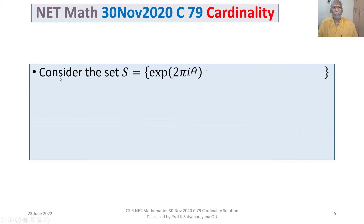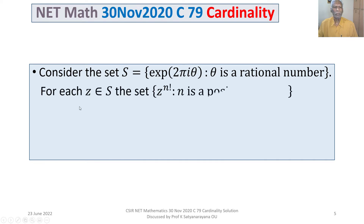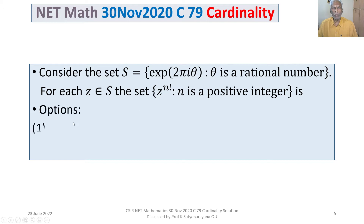The problem is: consider the set S = {e^(2πiθ) : θ is a rational number}. For each z belonging to S, consider the set consisting of z^(n!) where n is a positive integer. Four options are given to us.